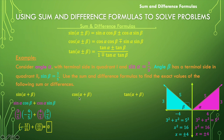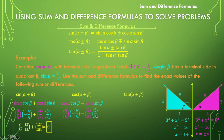Now let's do cosine of alpha plus beta, which equals cosine of alpha times cosine of beta minus sine of alpha times sine of beta. Cosine of alpha is four-fifths, cosine of beta is negative four-fifths, sine of alpha is three-fifths, and sine of beta is three-fifths. Multiplying gives negative 16 over 25 minus nine over 25, which equals negative 25 over 25, or negative one.